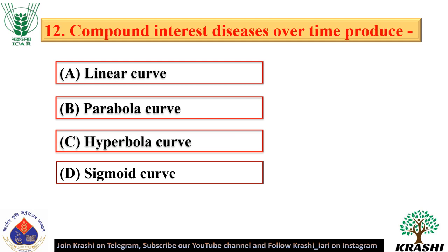Question number 12. Compound interest diseases over time produce a sigmoid curve.